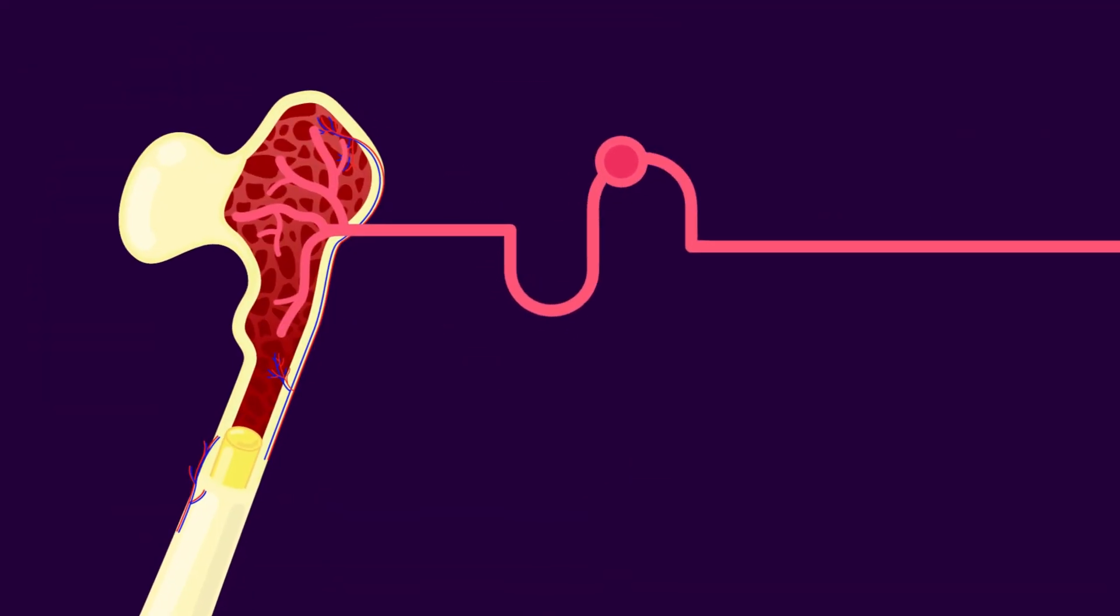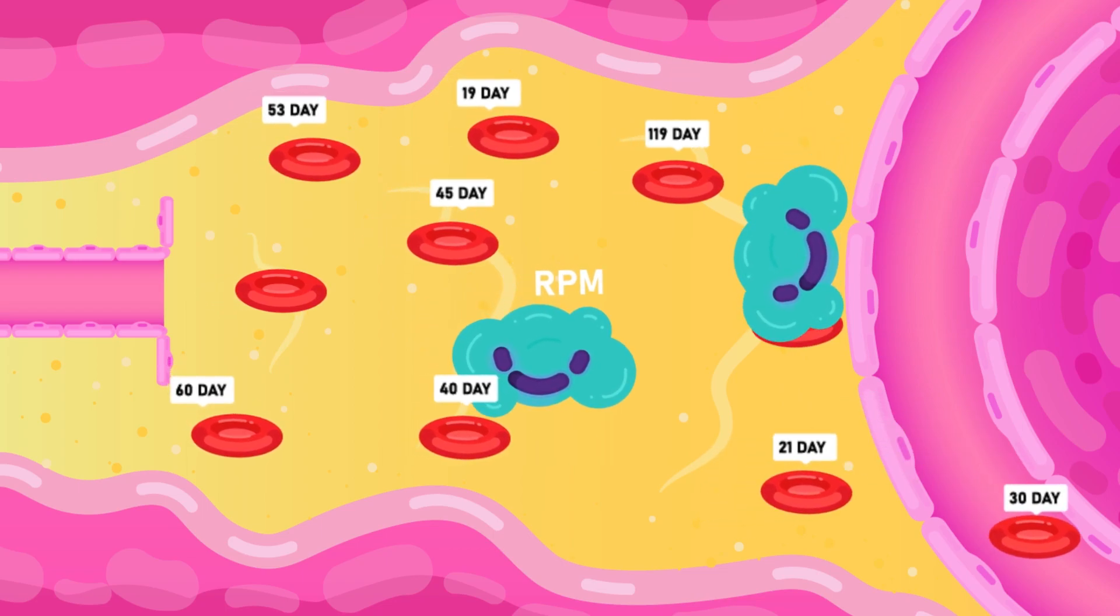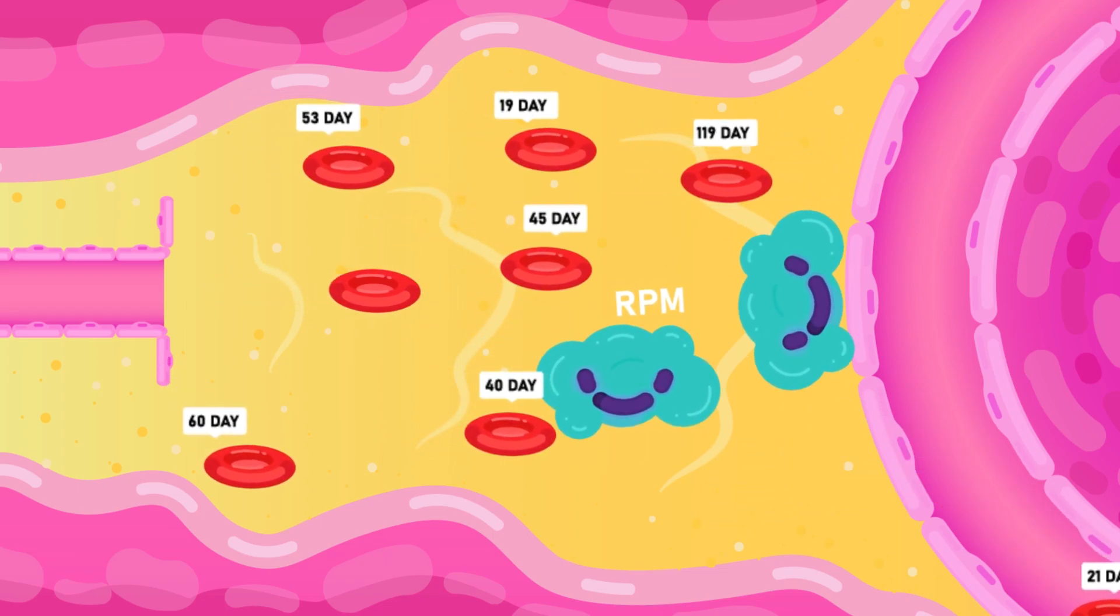The erythrocytes are formed in the bone marrow. After 120 days of service, they are broken down in the spleen and the liver.